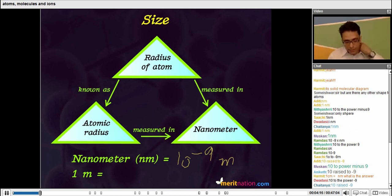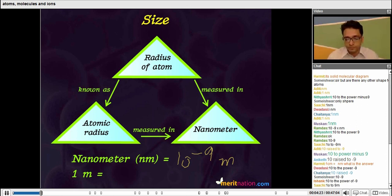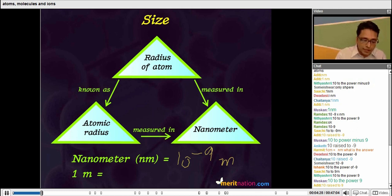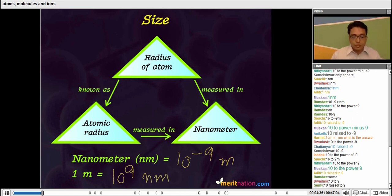Can somebody tell me how many nanometers are present in 1 meter? Yes, 10 to the power of 9. So 1 meter contains 10 to the power of 9 nanometers, so you have so many nanometers in 1 meter.